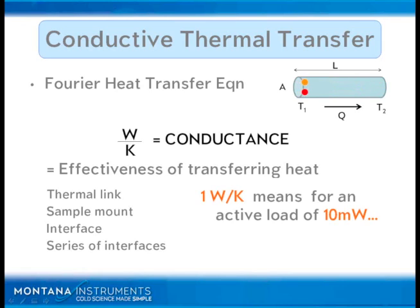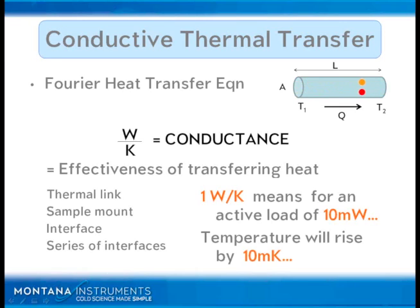As an example, if something has one watt per Kelvin — and one watt per Kelvin is a nice number to shoot for — many parts of the system will have higher than that, and if you're trying to do something difficult it might be a little lower. But what this means is for an active load of 10 milliwatts — say from your laser — you would expect your temperature rise to be about 10 millikelvin.